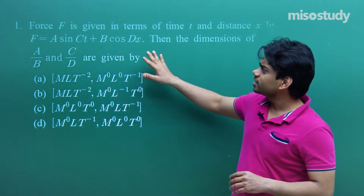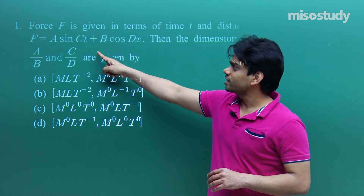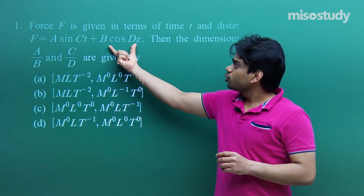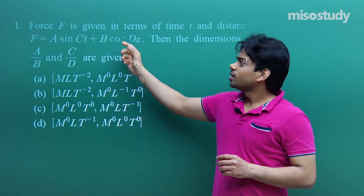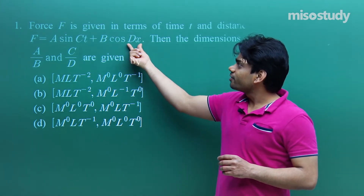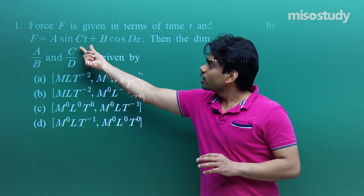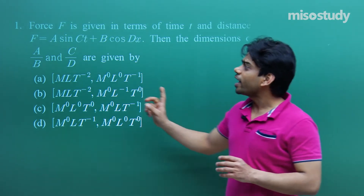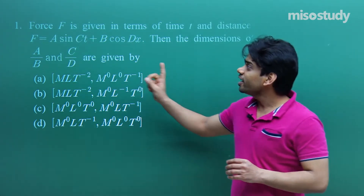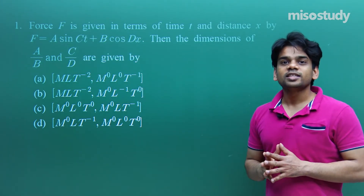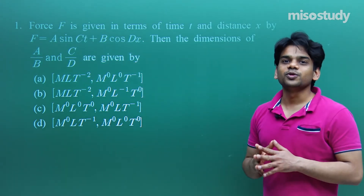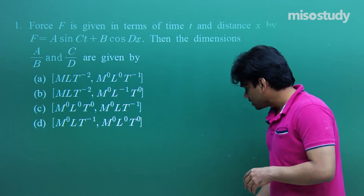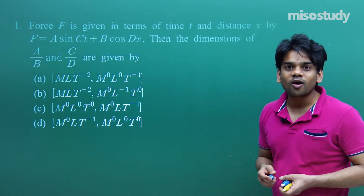Force is given as a trigonometric function: F = a·sin(ct) + b·cos(dx). Trigonometric values have no units, so the arguments ct and dx must be dimensionless. Therefore, a and b will have the units of the variable expressed — that is, a and b will have the units of force, i.e., Newtons. So when we take the ratio a/b, that will be a unitless quantity, having no powers of M, L, or T.